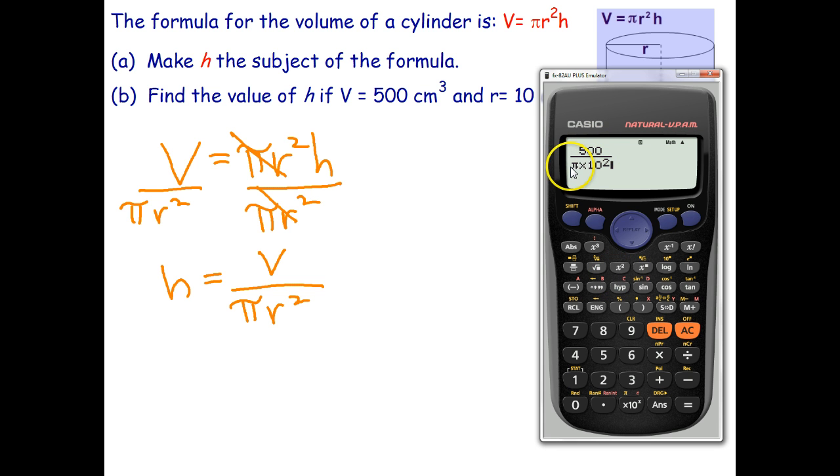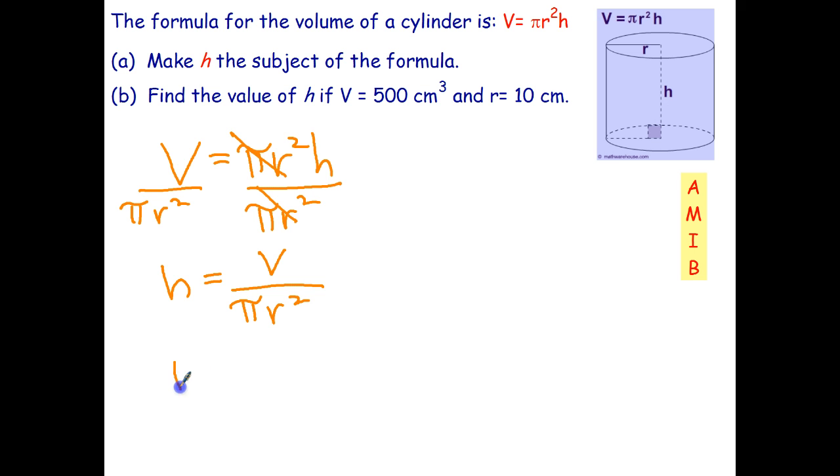500 divided by π times 10 squared. Yep, looks like I've done it correctly. And I get 1.59 etc. Rounding it to two decimal places, h = 1.59 centimeters.